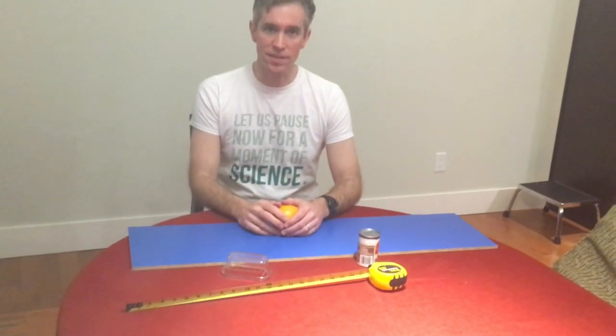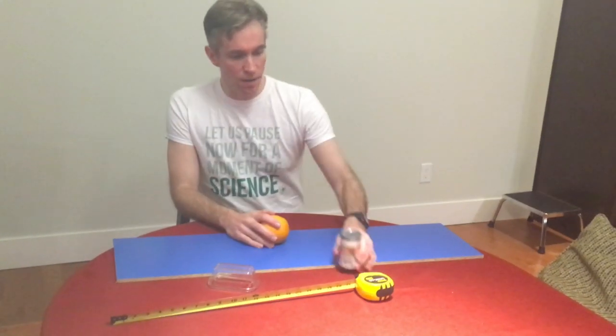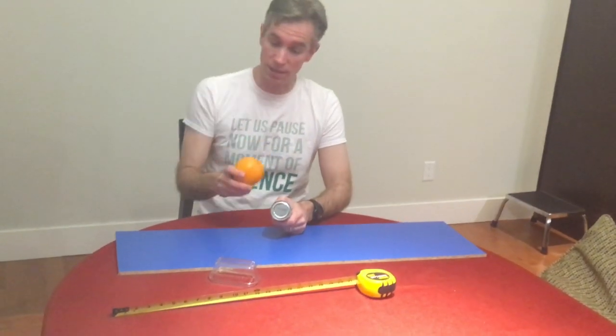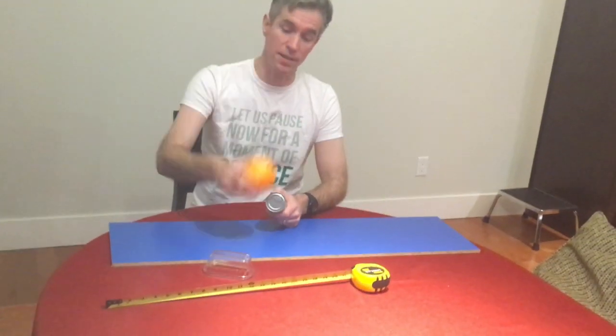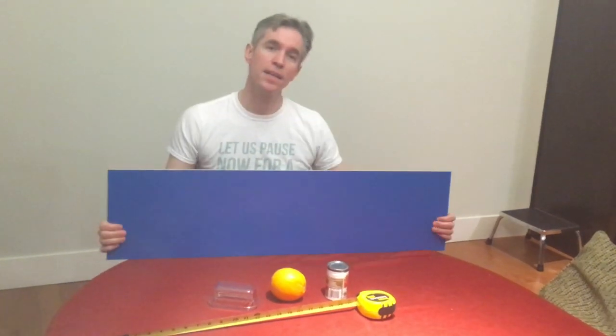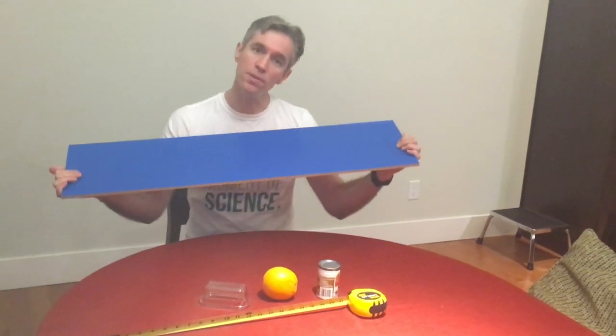The materials that we'll need for this lab are a round object. You can choose whatever you like, something that doesn't have to be perfectly round like a piece of fruit or some of the canned goods you've been hoarding. You'll need something to make an inclined plane—anything will do, like a textbook.